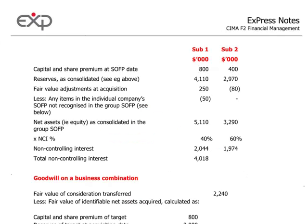Hello and welcome to CIMA F2 Financial Management. We are still in chapter 1. This is a continuation because we were planning to cover the key workings for your consolidation question. In the past video we looked at the retained earnings consolidated. In this video we look at two other key workings: the non-controlling interest working, which is specific to consolidation, and the goodwill on a business combination.